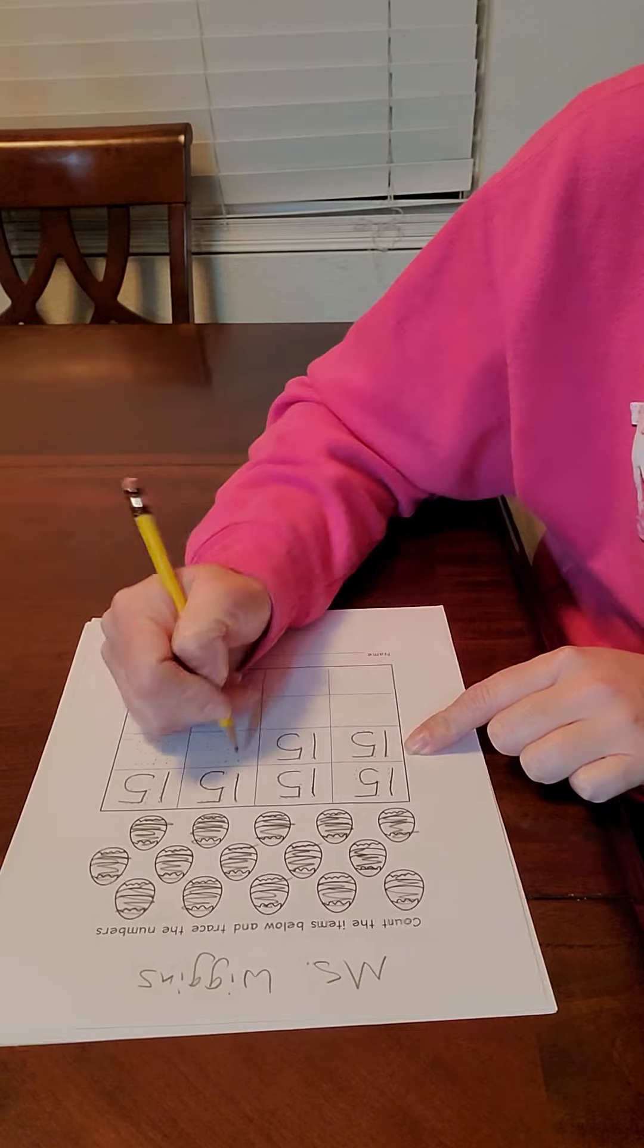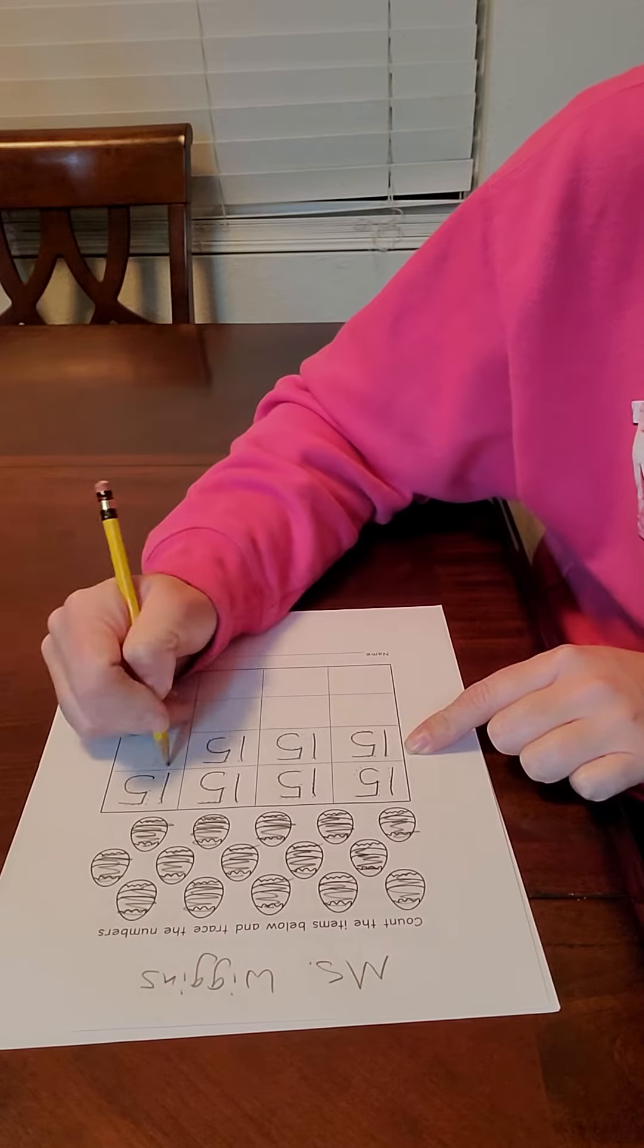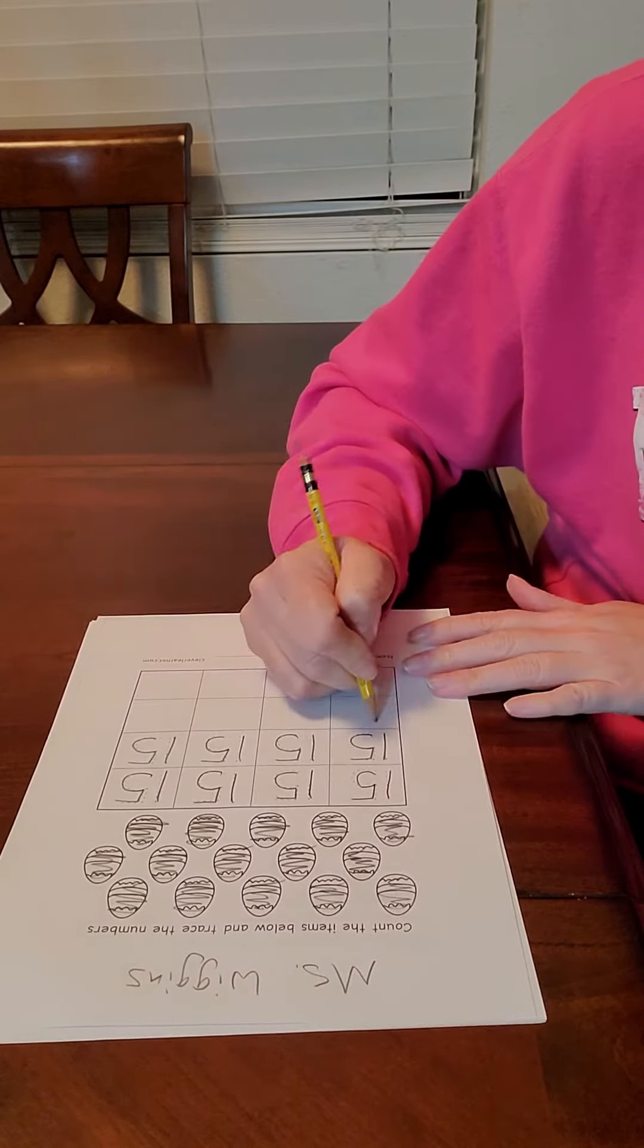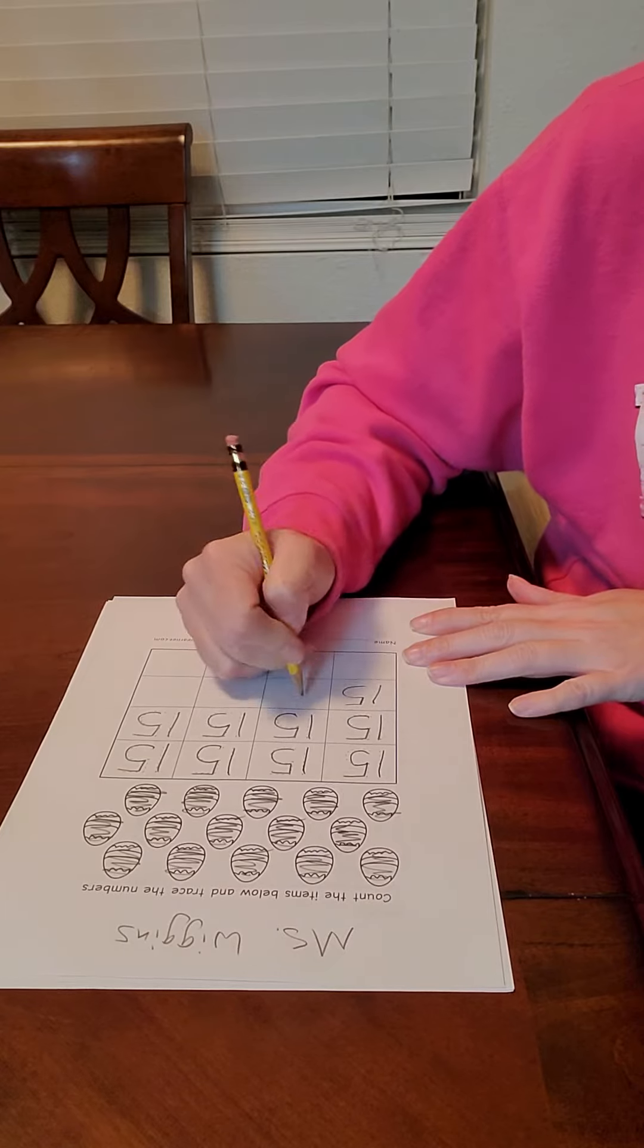And then we're going to write the 15s by ourselves. It's a 1 and a 5. Make sure your 5s are going the correct direction.